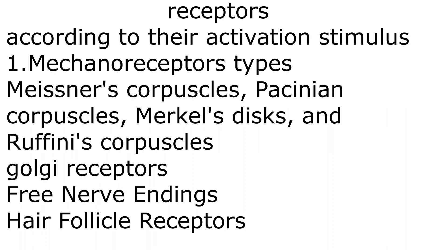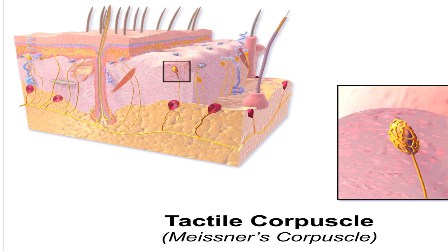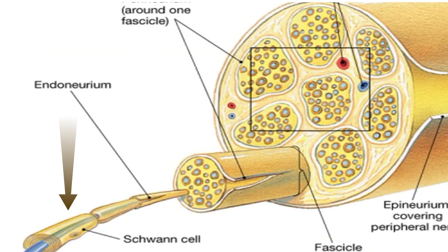Meissner's corpuscles are also known as tactile corpuscles. They are located in the dermal papillae of the skin, especially the skin of the palm of the hand, sole of the feet, lips, and external genitalia. These corpuscles are ovoid in shape and have a capsule of connective tissue continuous with the endoneurium of the entering nerve. The endoneurium is the innermost covering of a nerve fiber or axon.